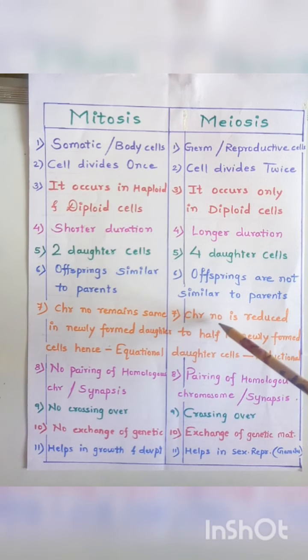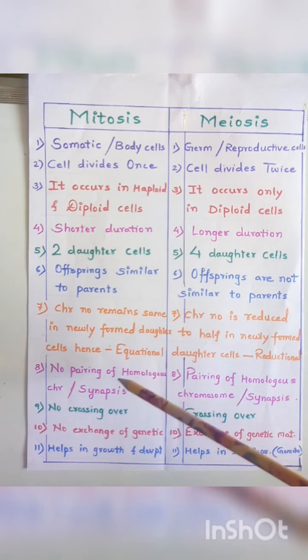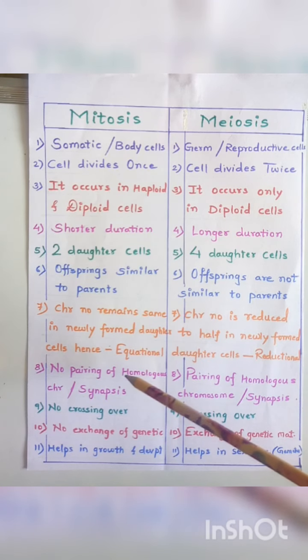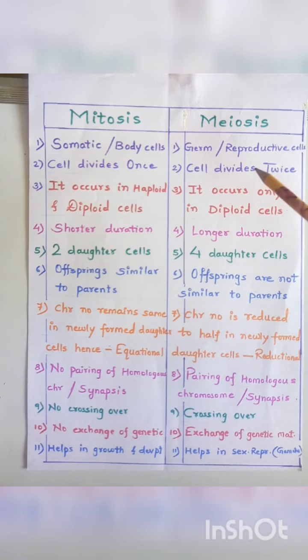Because the chromosome number remains the same, mitosis is also called as equational division. Whereas in meiosis the chromosome number is reduced to half, hence it is also called as reduction division. In mitosis there is no pairing of homologous chromosomes, whereas in meiosis pairing of homologous chromosomes takes place.